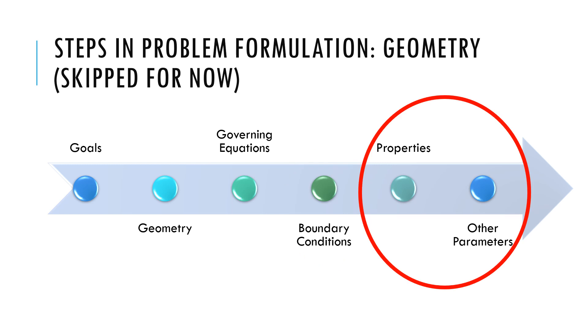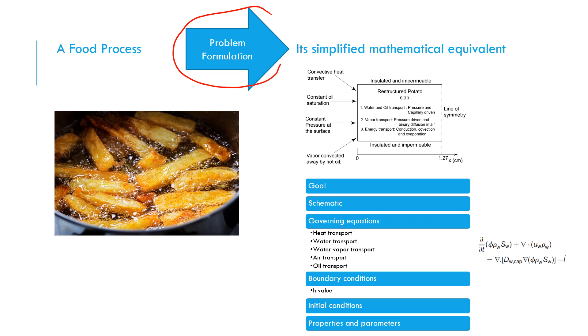The last two items on the list are properties and parameters, like viscosity or heat transfer coefficient. These are approximated from available literature at least to get started. Depending on how the model goes, we may need to come back and measure some of these more accurately. To summarize the problem formulation step, we are replacing a real physical process with equations that describe the physics of the process. These equations are yet to be solved.